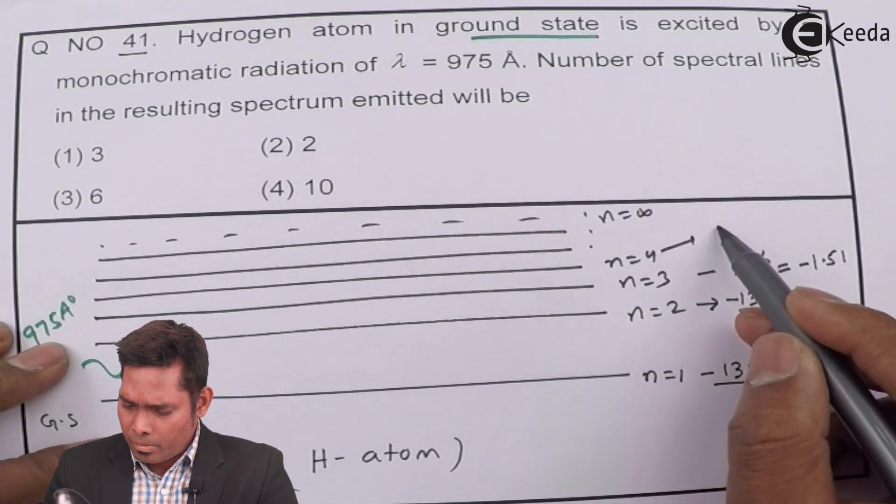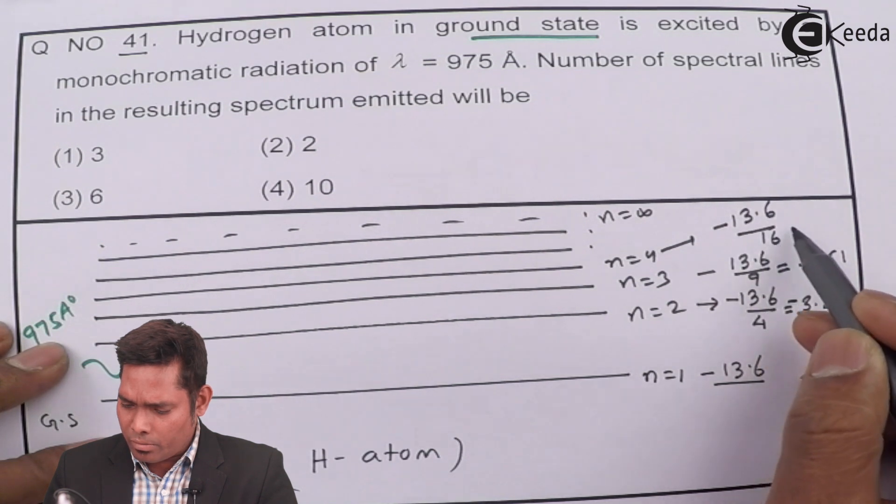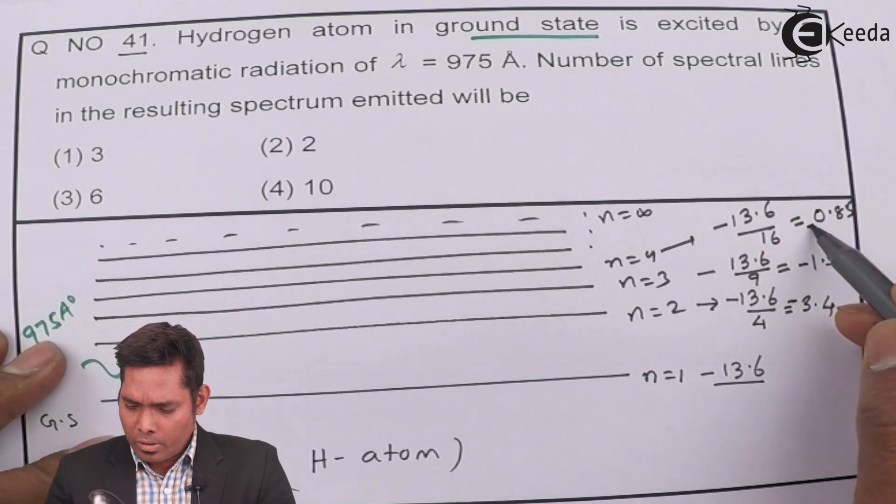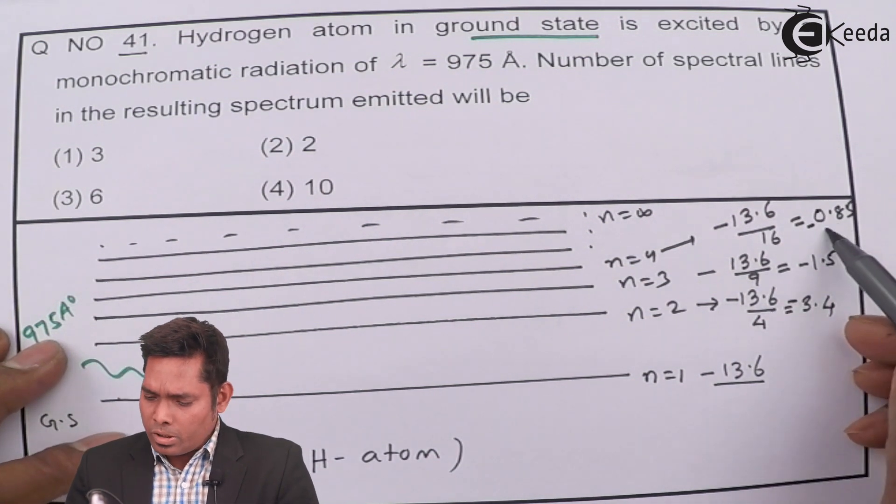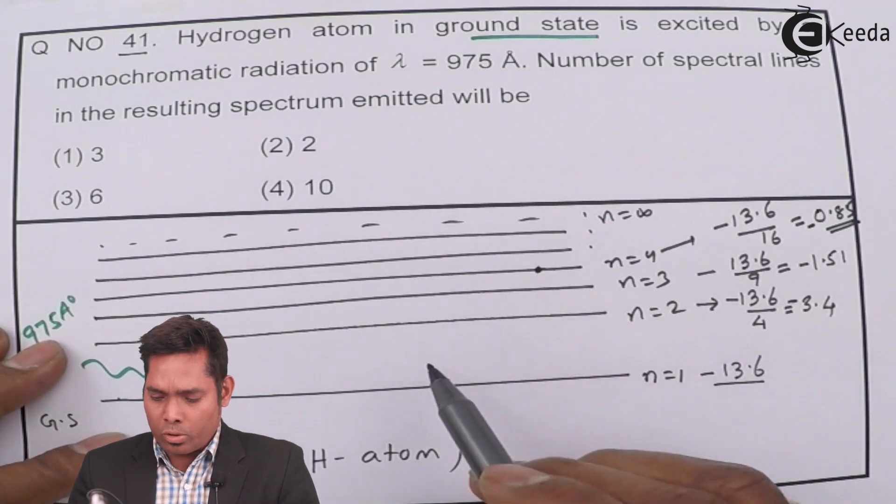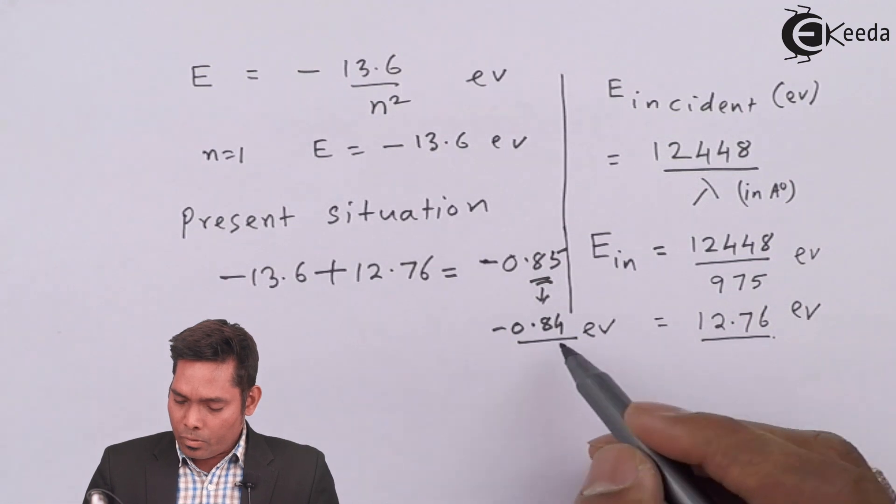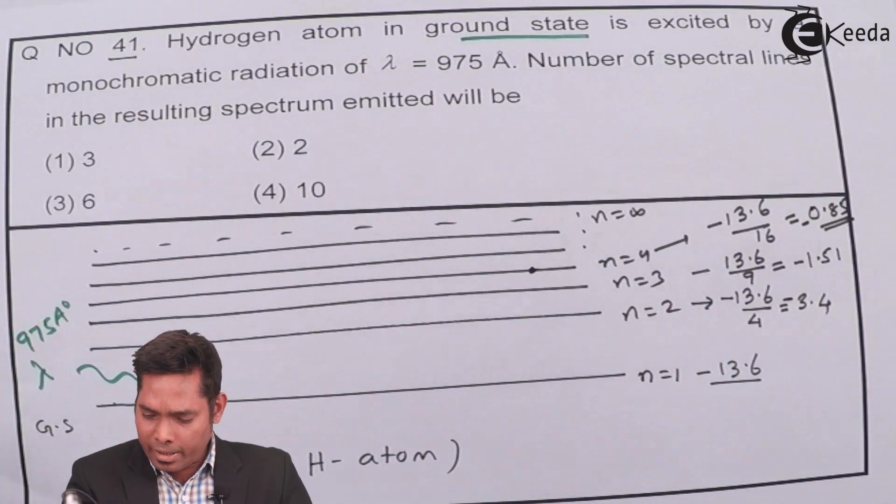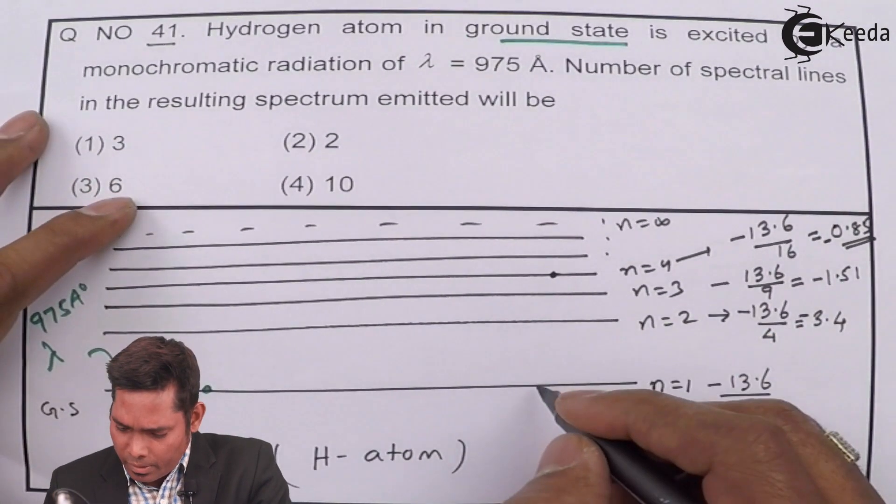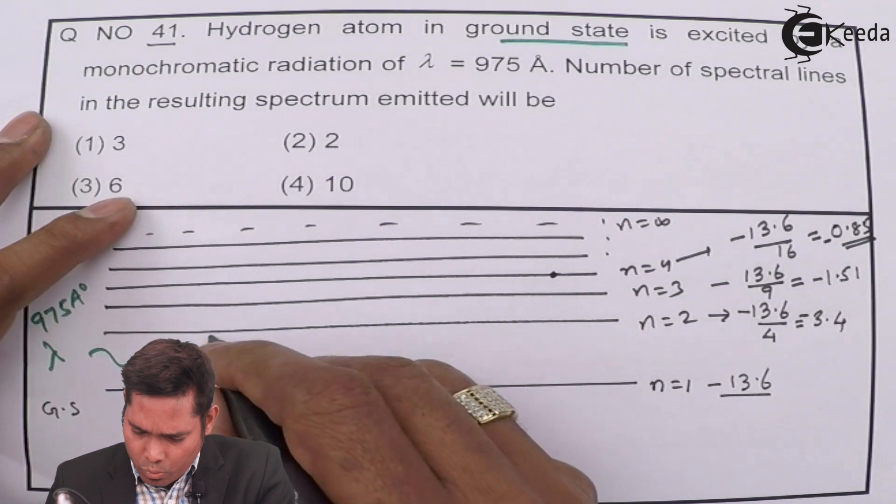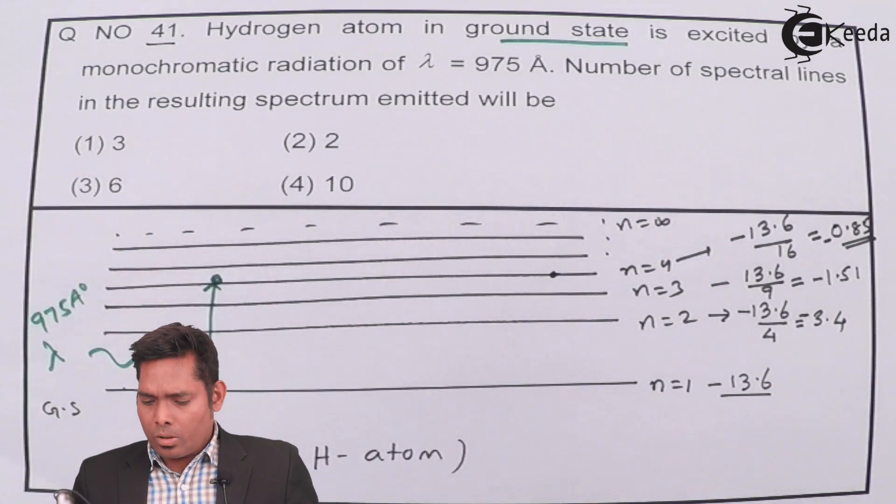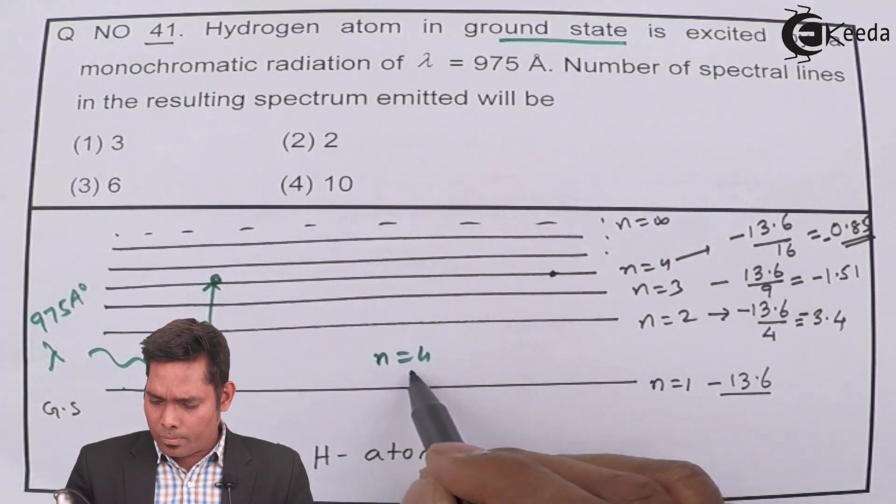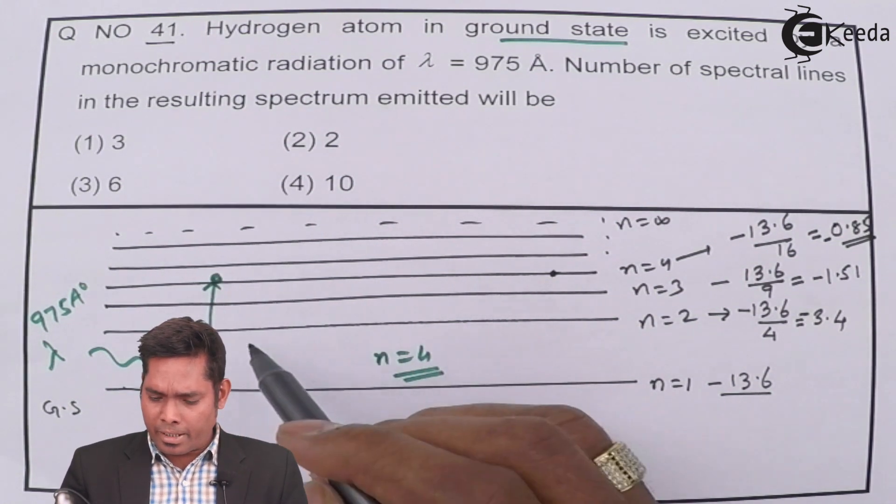This one, minus 13.6 divided by 16, which is 0.85, 0.85. So this 0.85 is obtained here in the fourth orbit. The fourth orbit. 0.85 is obtained in the fourth orbit. So we can say that the electron will get excited to this one from here to the fourth level, fourth level. If n is 4, now for this question, n becomes 4. If n is 4, how many such spectral lines possible?